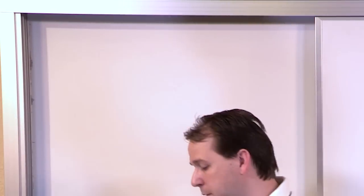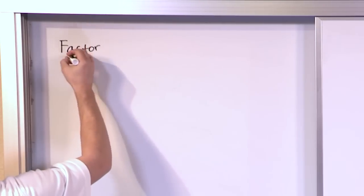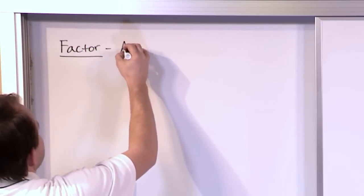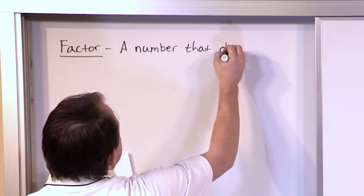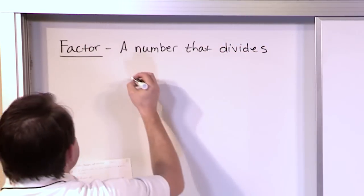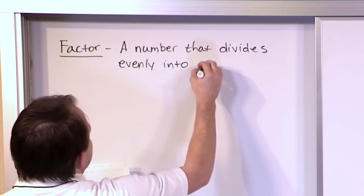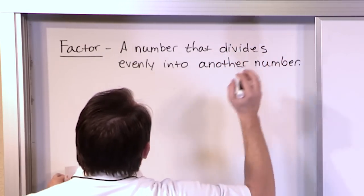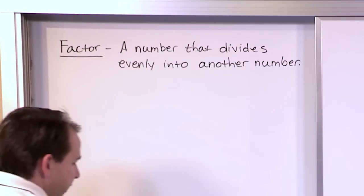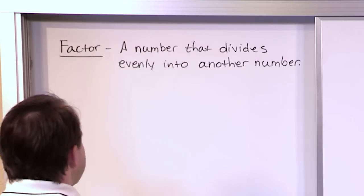So when you talk about the factors of a number, I'll write a quick definition up here and then we'll go on. A factor is a number that divides evenly into another number. This can be a little confusing, so let me give you a quick example and then we'll understand exactly what these words mean.